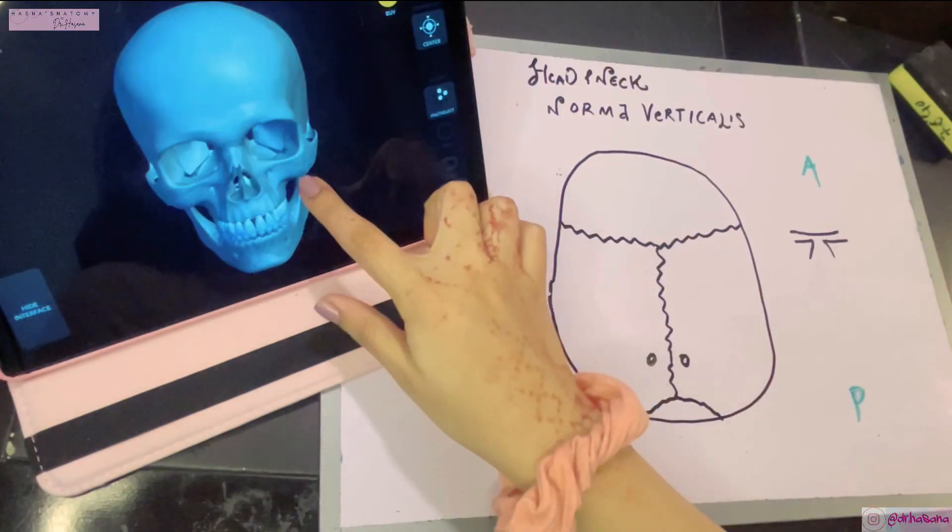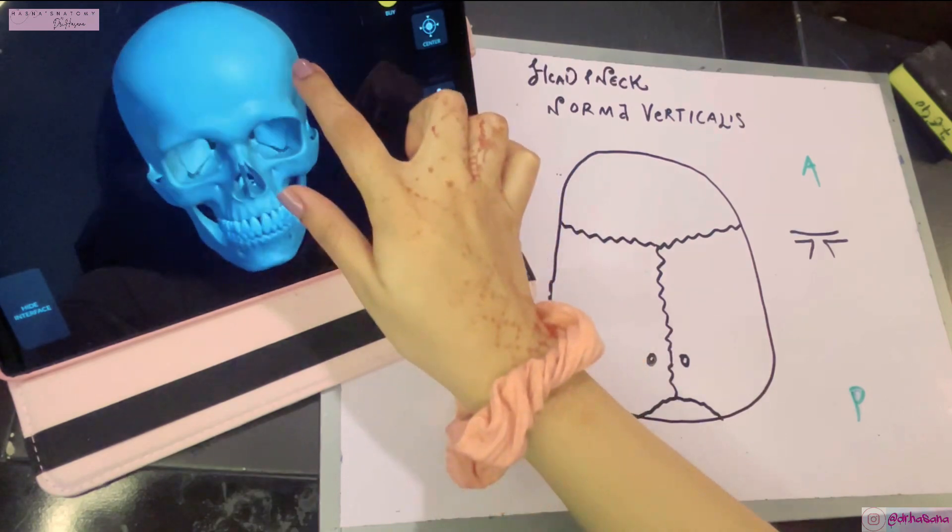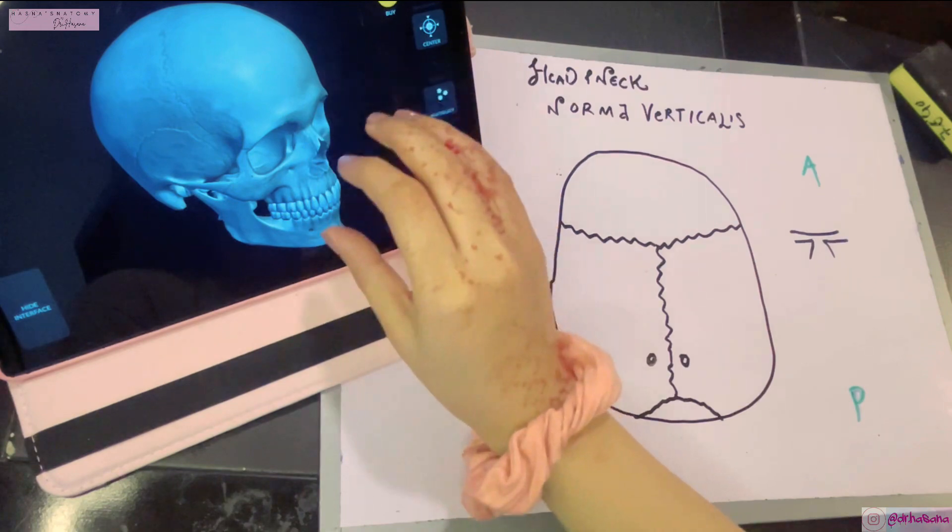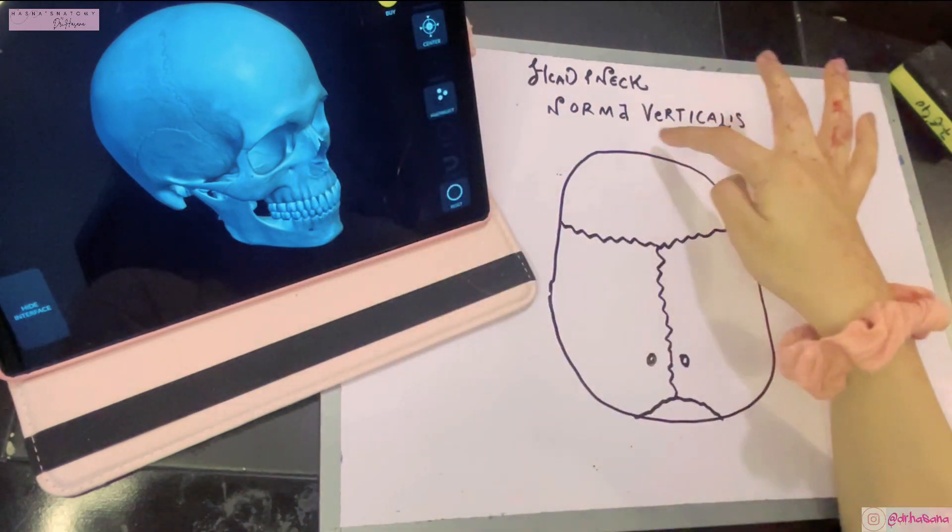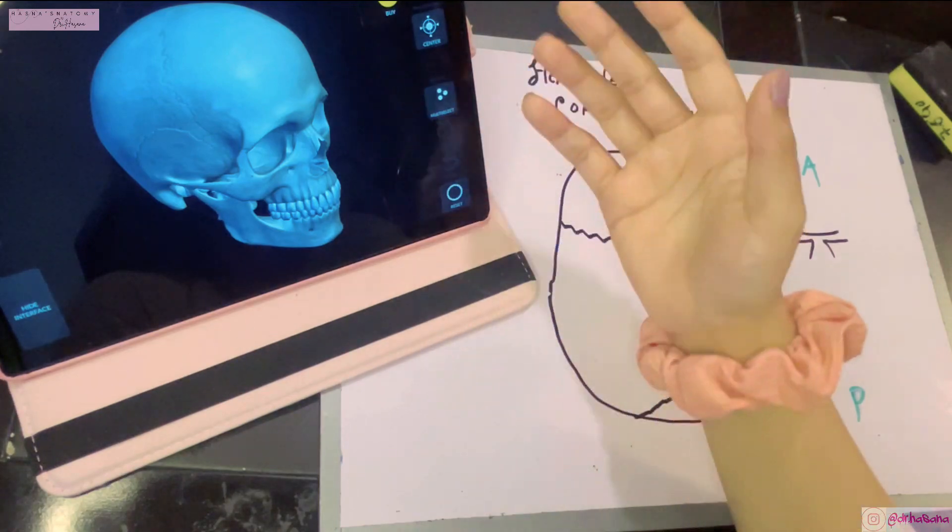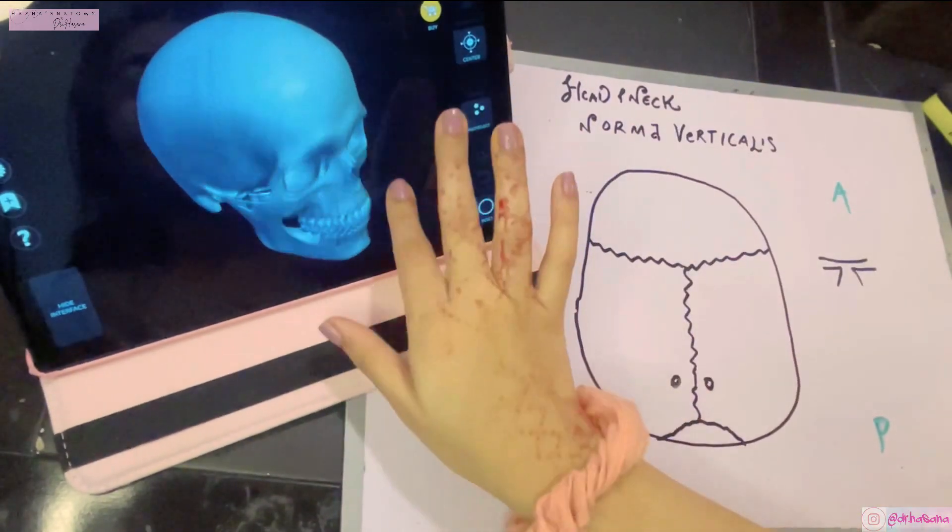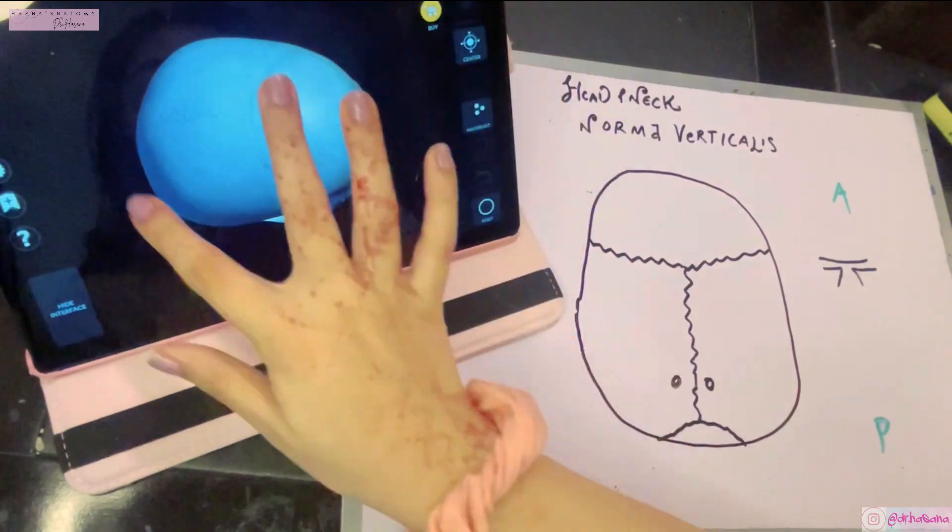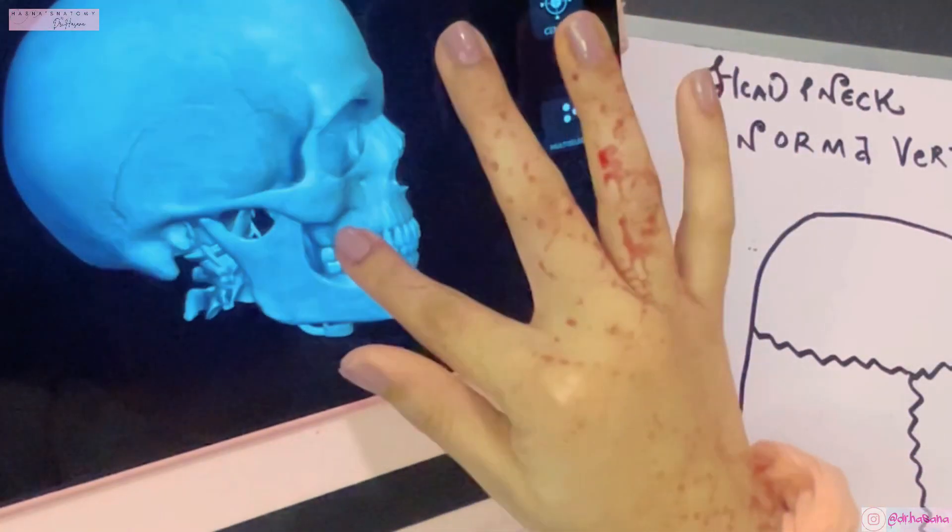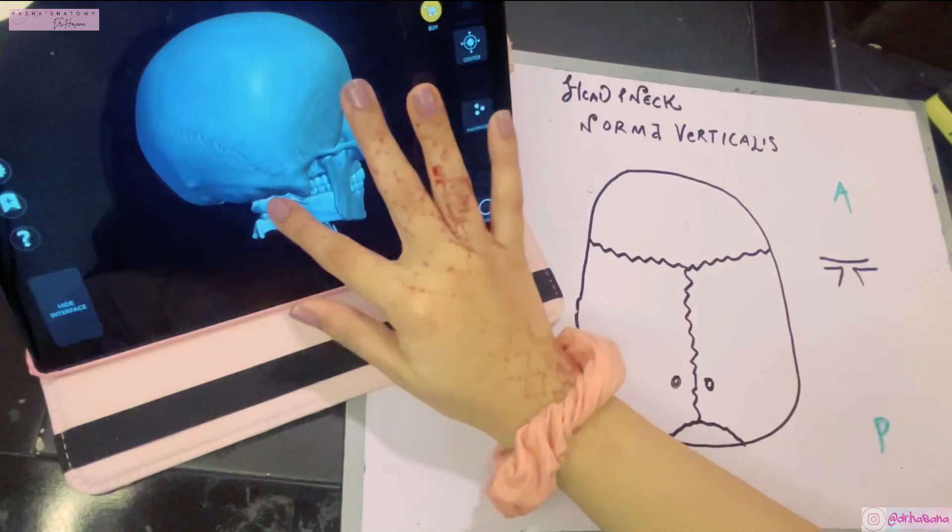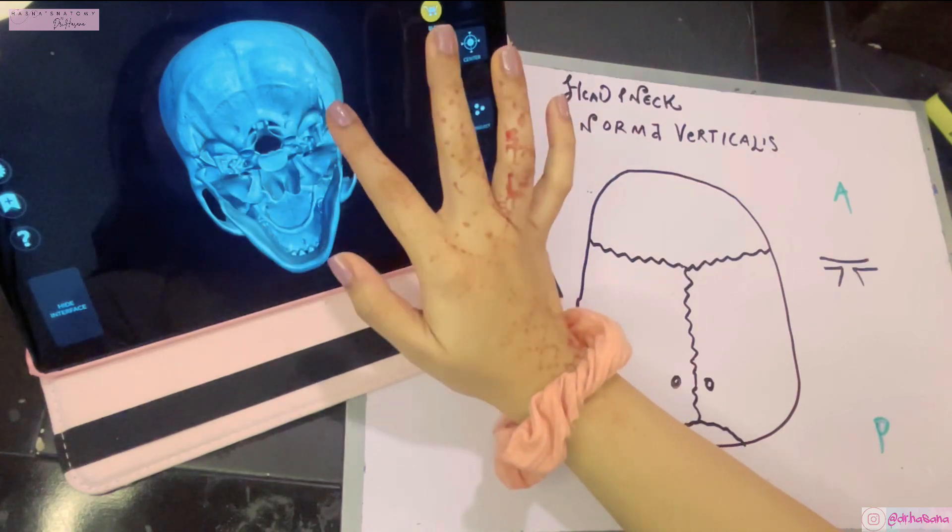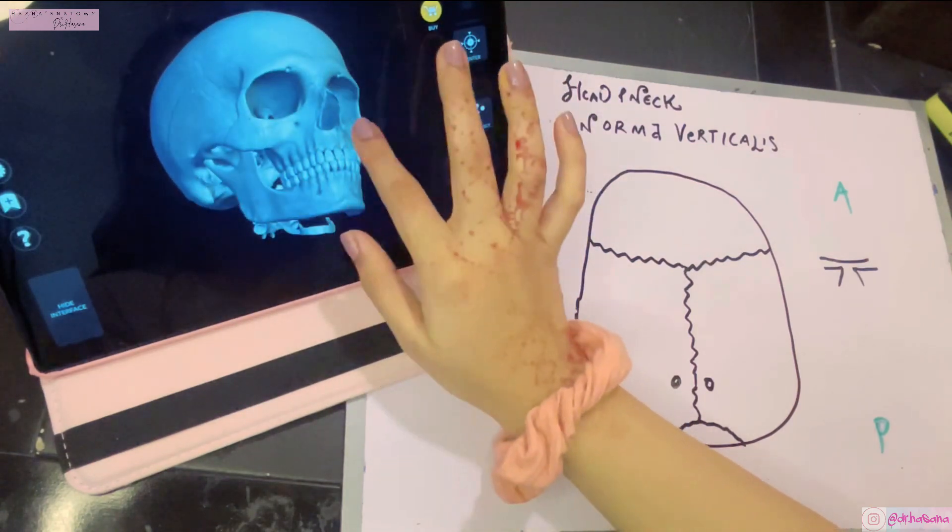Now the skull has different views. It has this anterior part, this lateral part. All these parts are basically divided into normas. We are going to study these normas sequence-wise. Today we're looking at the norma verticalis, which is basically the superior aspect of the skull. The anterior view is the norma frontalis, lateral view is the norma lateralis, posterior view is the norma occipitalis, and the inferior view is the norma basalis. So these are the various views of the skull.